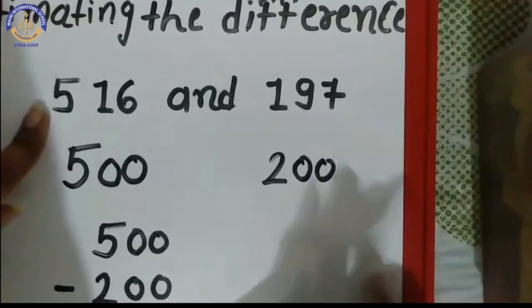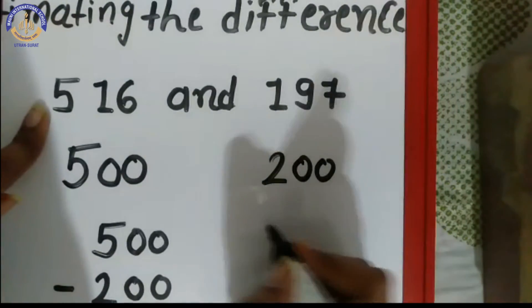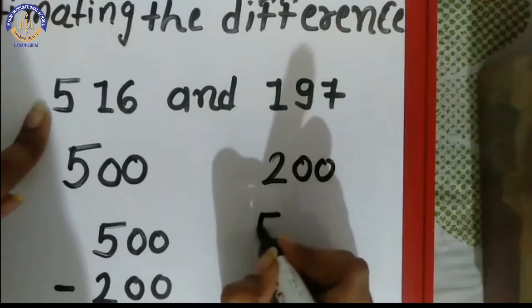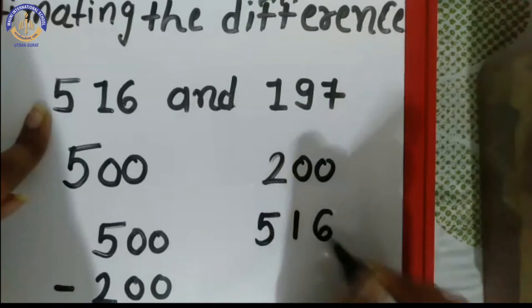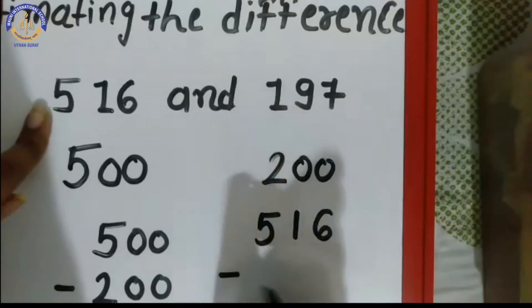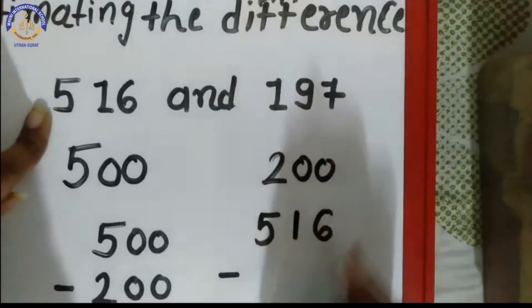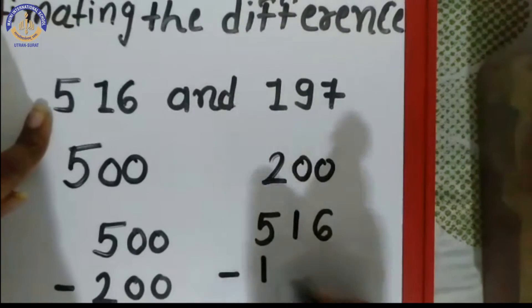For the exact difference, we take the actual numbers: 516 minus 197.